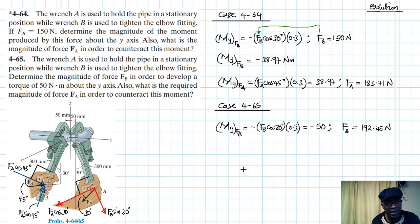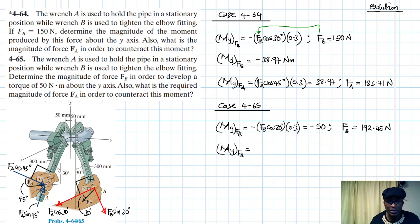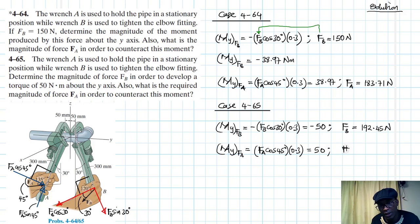Now what is the required magnitude of FA to counteract this moment? The moment due to FA equals FA·cos 45 times 0.3, producing a positive moment using the right-hand thumb rule. Setting this equal to 50 Newton-meters, FA equals 50 divided by 0.3 times cos 45, which gives us 235.70 Newtons.